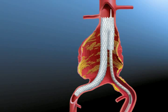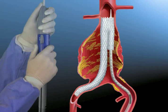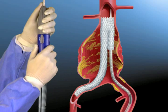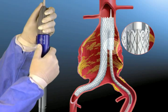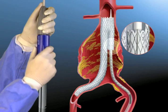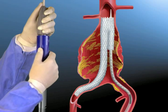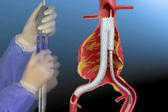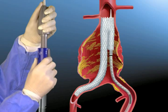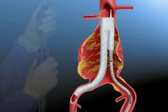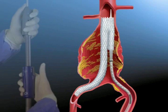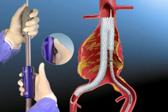To deploy the iliac stent graft, hold the front grip of the delivery system stationary and slowly withdraw the graft cover by rotating the slider counterclockwise with the other hand. At any point, the trigger on the slider can be pulled back for more rapid deployment. Caution! When using the trigger to rapidly deploy the stent graft, be sure to hold the delivery system stationary.